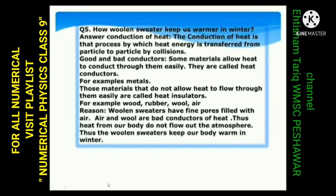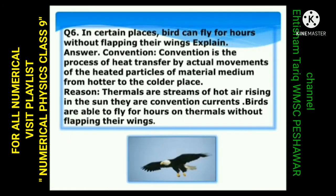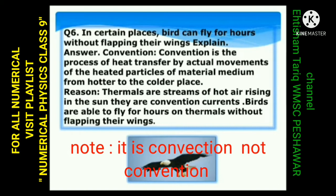Question 6: In certain places, birds can fly for hours without flipping their wings. Explain. Here the concept is convection — the actual movement of heat particles from one place to another. جب ہوا گرم ہوتی ہے تو وہ اوپر کی طرف جاتی ہے اور اس میں یہ birds اپنے پر پھیلا لیتے ہیں اور اوپر کی طرف move کرتے ہیں۔ Answer: Convection is the process of heat transfer by actual movement of heated particles of material medium from hotter to the colder place. Reason: Thermals are streams of hot air rising in the sun; they are convection currents. Birds are able to fly for hours on thermals without flipping their wings.